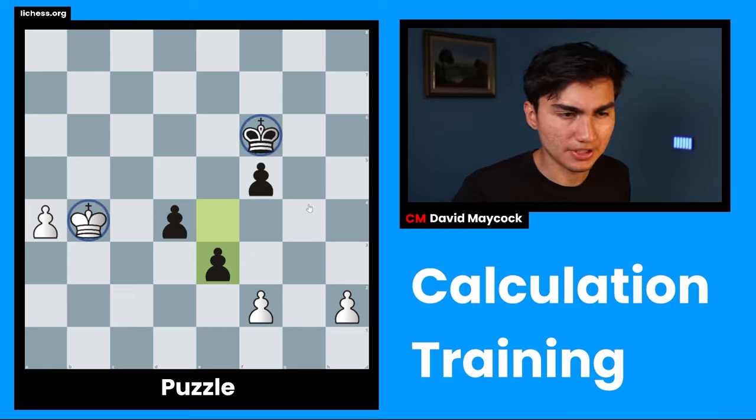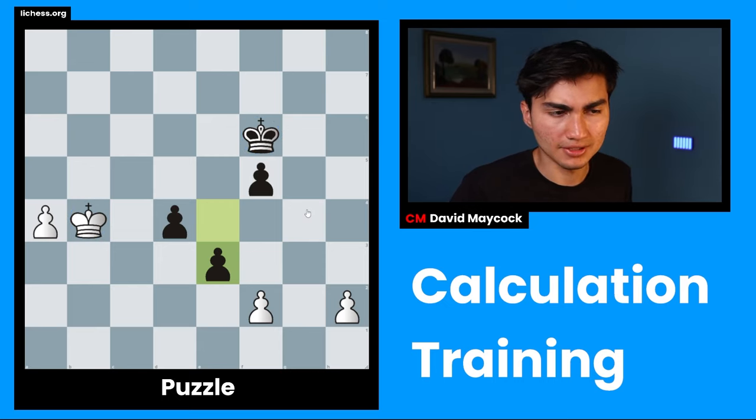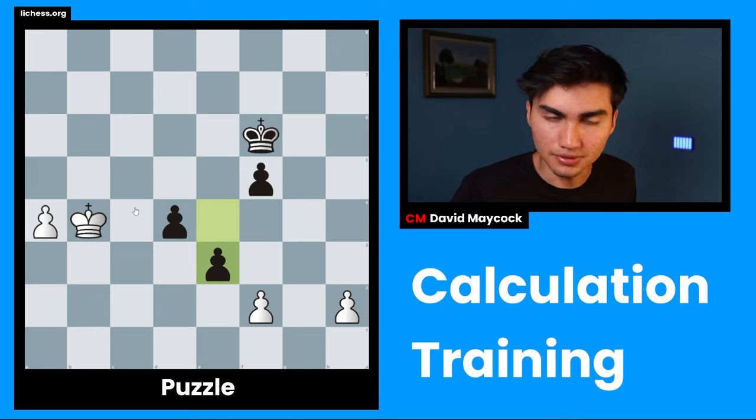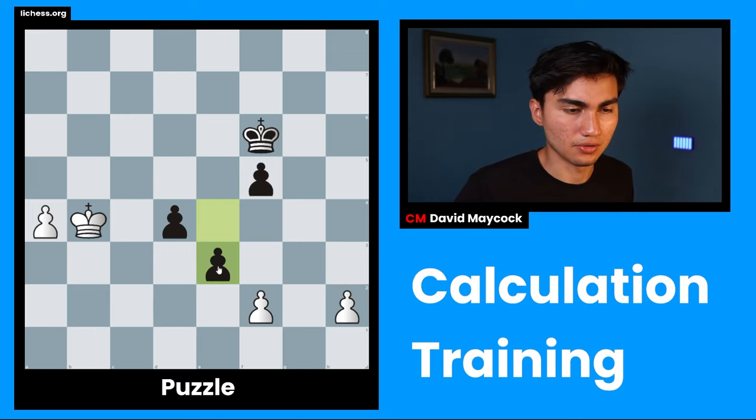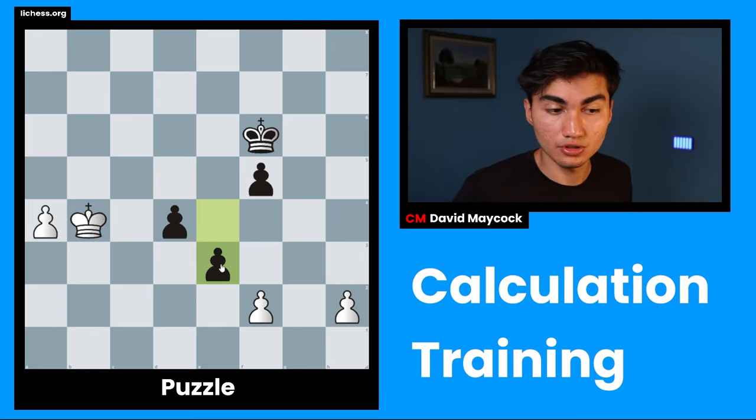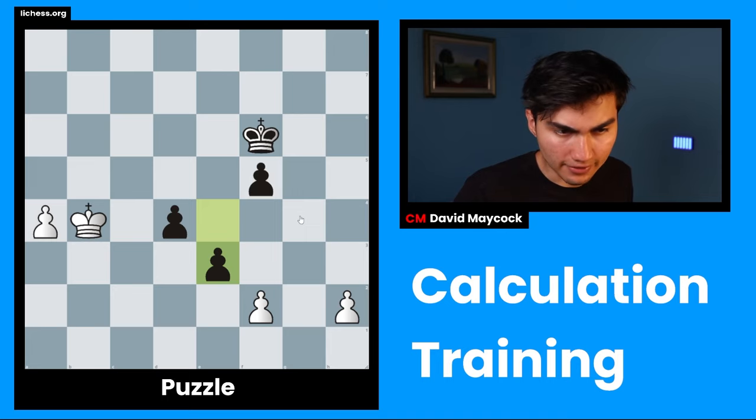Something else I'm going to evaluate is king safety, but okay, this is an endgame. King safety is not going to be a high priority. If anything, king activity is going to be a high priority. So how active is this king going to be towards stopping that pawn? That's something that remains hidden until I start calculating. So I think I've evaluated enough.